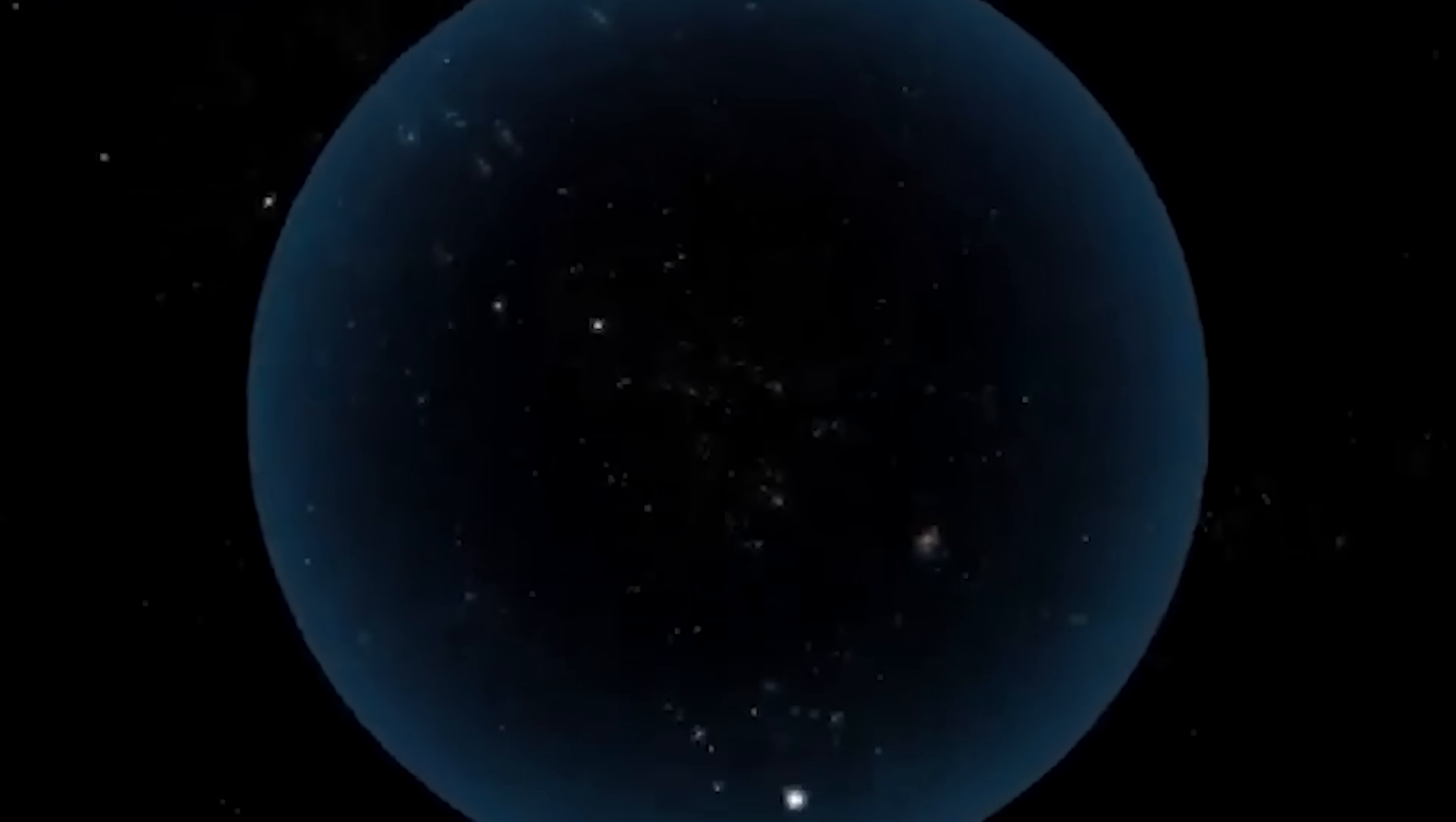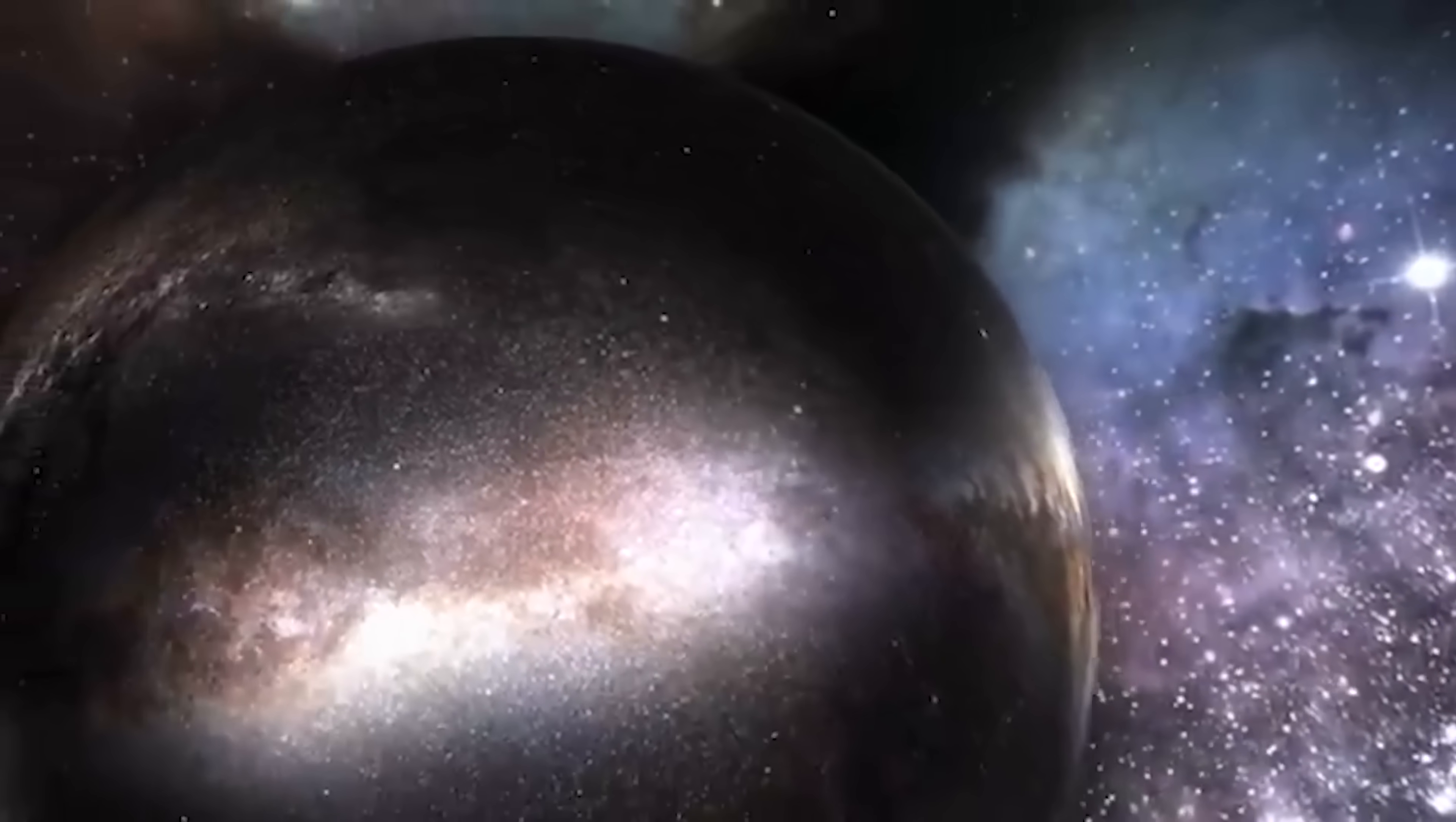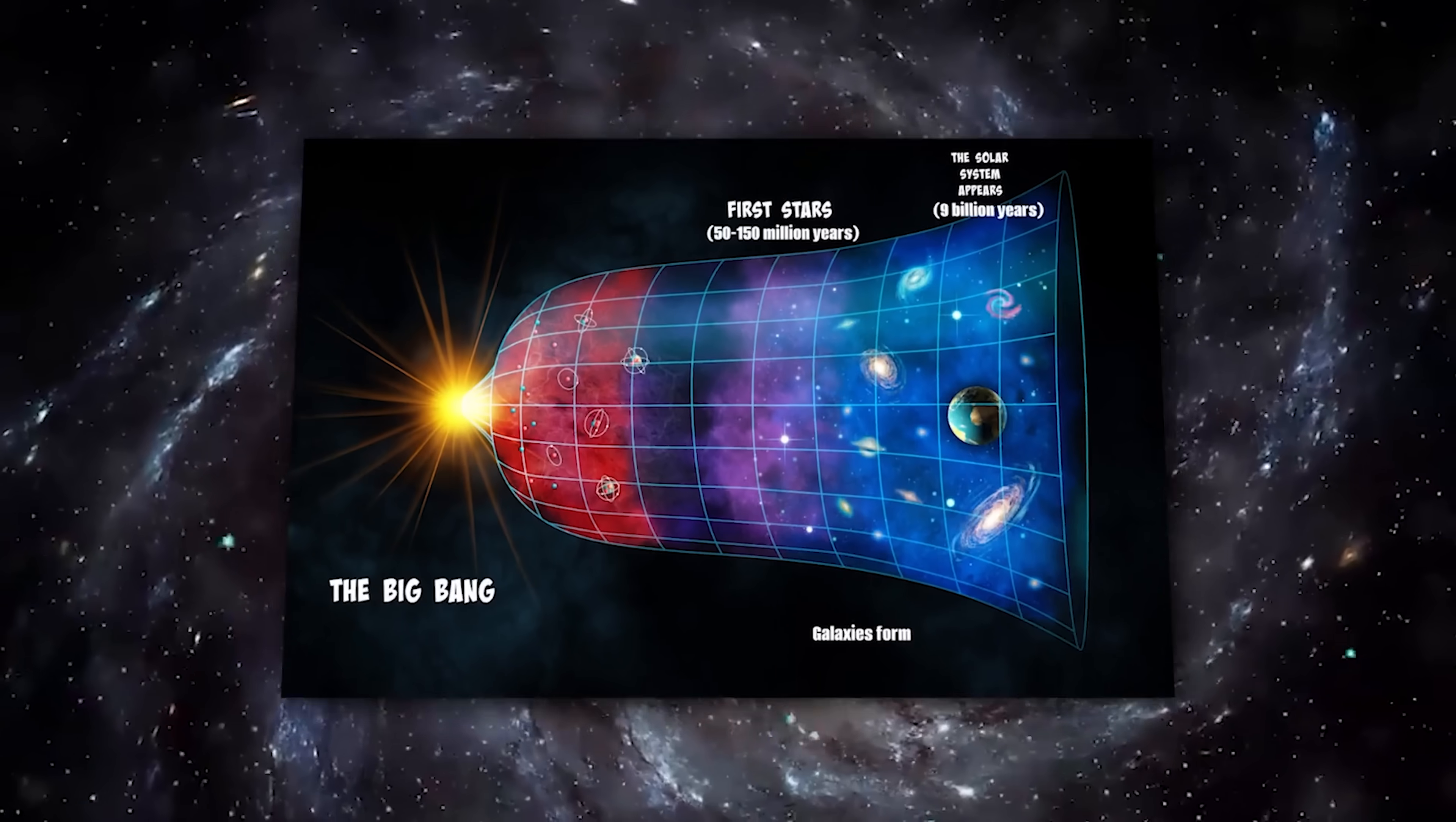However, there is a finite limit to how far we can peer into the cosmos. Scientists refer to this boundary as the observable universe, which spans approximately 92 billion light-years across. When we look toward the edge of this observable universe from Earth, we encounter a vast expanse filled with cosmic microwave background radiation. This radiation serves as a remnant snapshot of the early universe, illustrating the state of the cosmos shortly after the Big Bang.